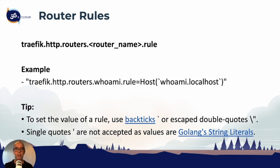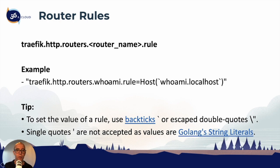Router rules — this is really the starting point of traefik. We need to define a rule in traefik in order to start routing traffic. So in this case we have traefik HTTP routers, and we're going to assign a rule to the router. In this example, our router name is whoami, and we're going to assign rule equals host — so we're assigning a hostname to our router, in this case whoami.localhost.